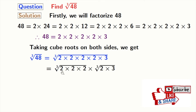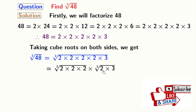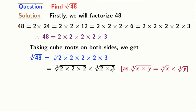After grouping, we get cube root of 2 times 2 times 2, times cube root of 2 times 3. Here, we have used the rule that cube root of x times y is equal to cube root of x times cube root of y, where x is 2 times 2 times 2 and y is 2 times 3. From the first cube root we get 2, and simplifying the second cube root we get cube root of 6.